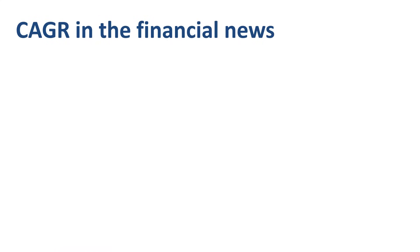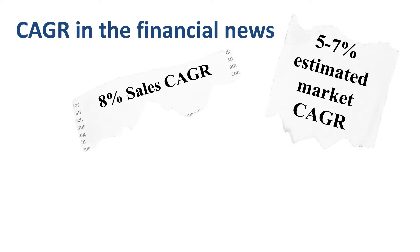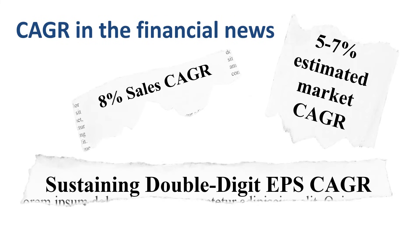CAGR is often found in the financial news, more specifically in merger and acquisition announcements, as well as investor presentations where a longer-term perspective is taken than just the current year. You might find a CEO or CFO talking about the CAGR of the attractive markets the company competes in, the commitment the company makes on the CAGR of its revenue, and the resulting CAGR in earnings.